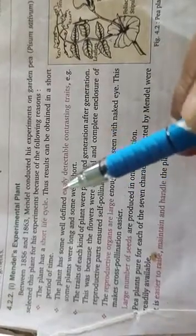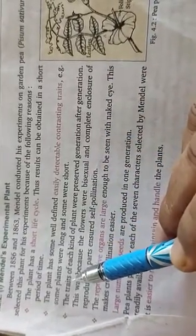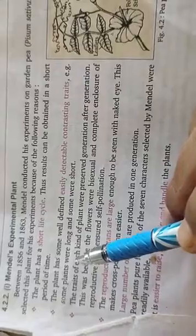The plant has easily observable characteristics. For example, some plants are long, some are short. The flower color varies.